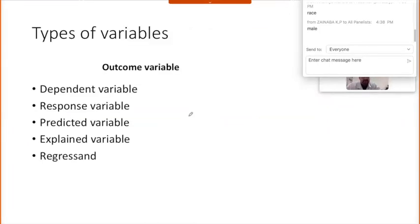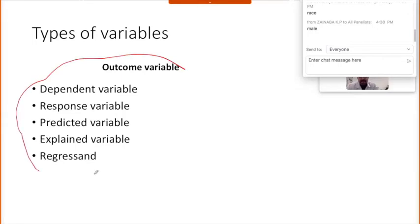People often get confused by the different names given to variables. An outcome variable may also be called a dependent variable, a response variable, a predicted variable, an explained variable, or a regressant — but these are all just names for a single outcome variable. For example, the outcome of a patient after six days of labor would be the dependent or response variable.